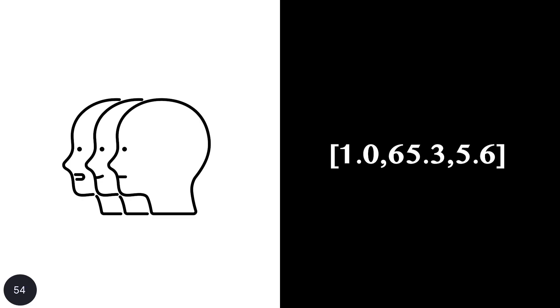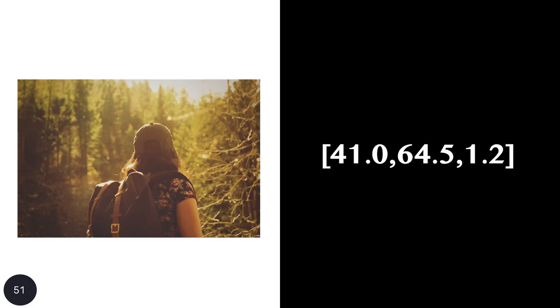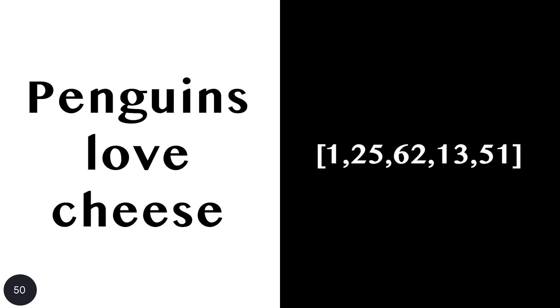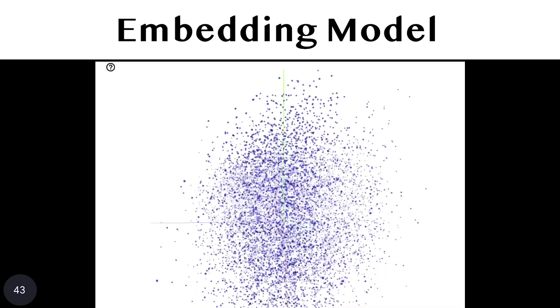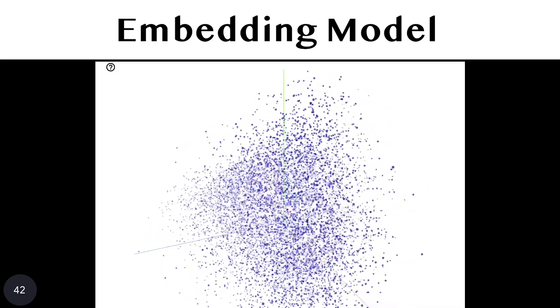My personality, an image, or a sentence can all be represented as a vector. We won't get too technical, but just know that the way data is converted into a vector is by using a special type of neural network called an embedding model. Once data is converted into a vector, we can easily compare these vectors to understand how similar or different the underlying data is.